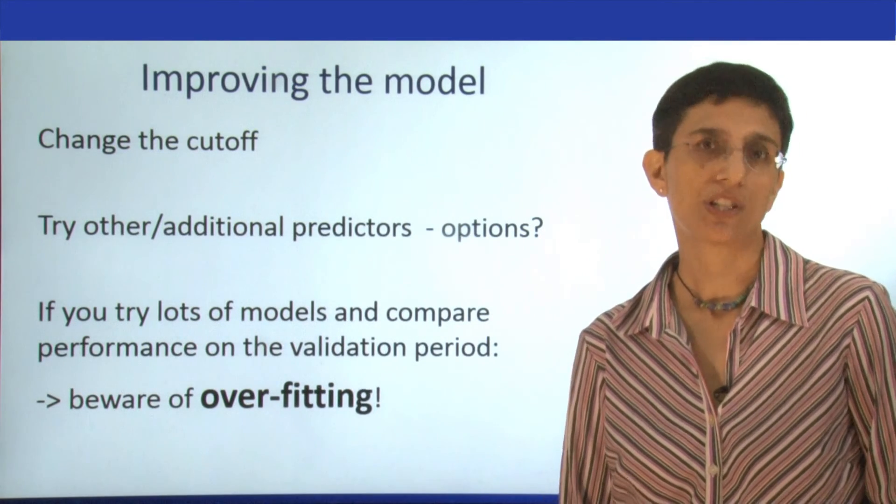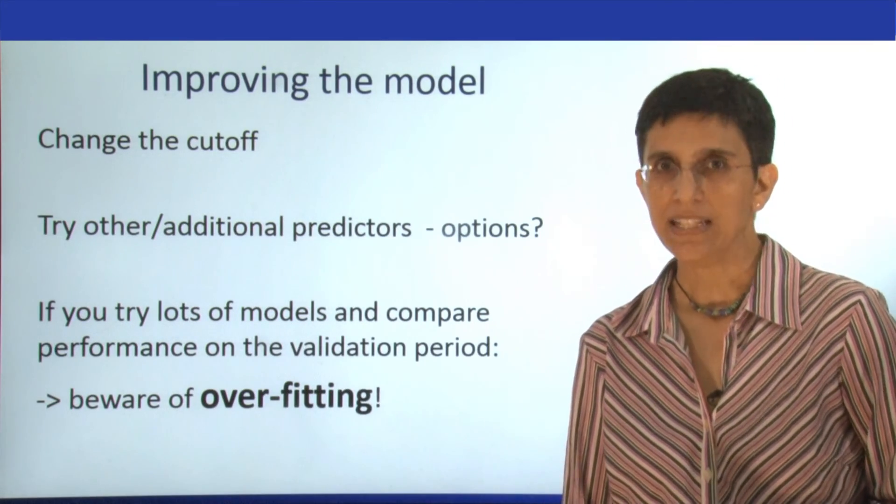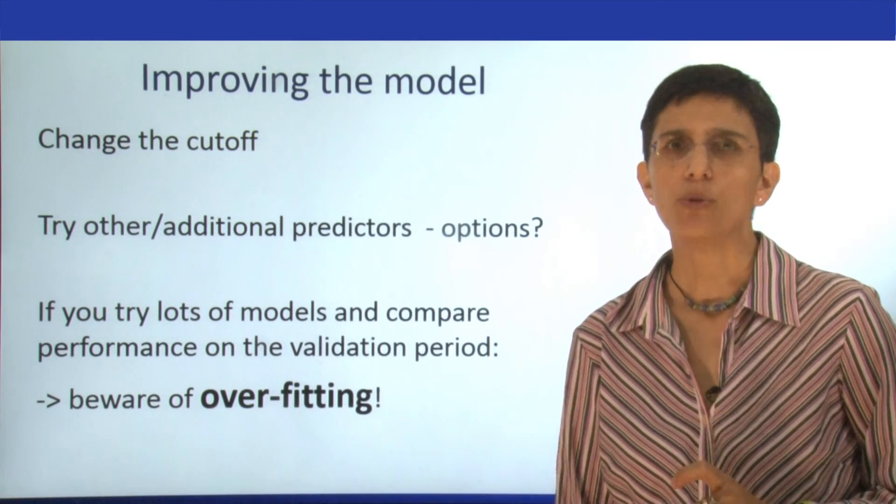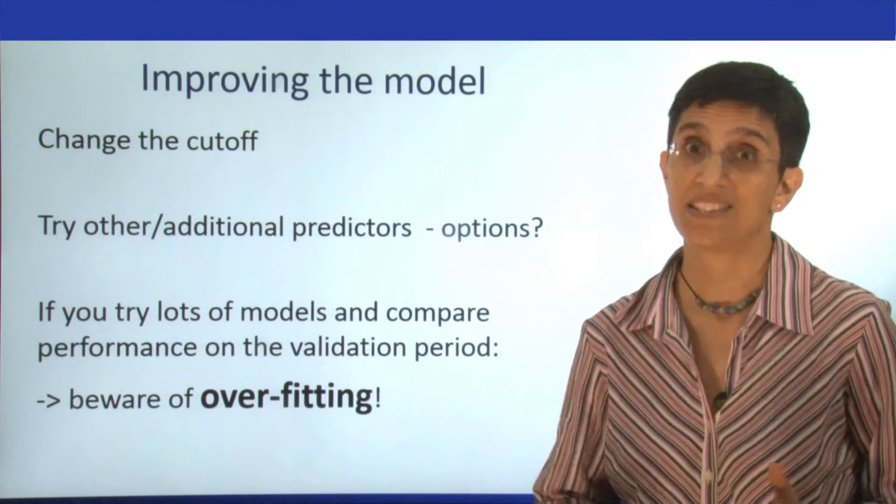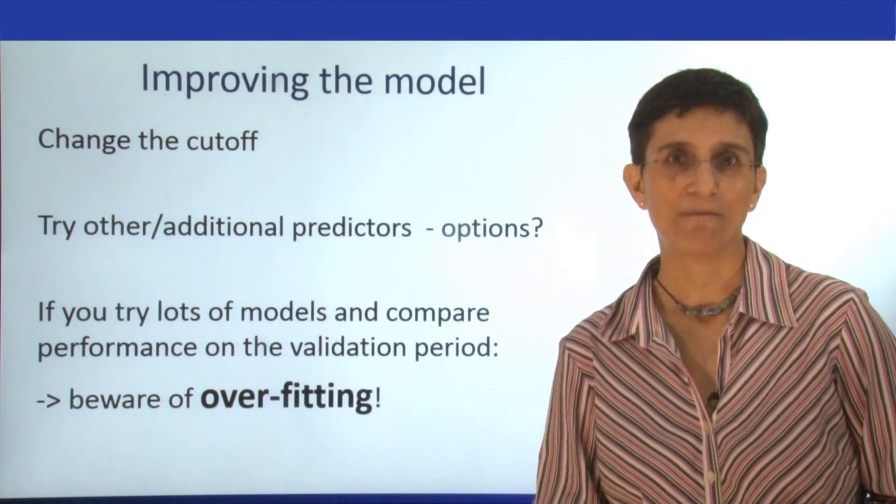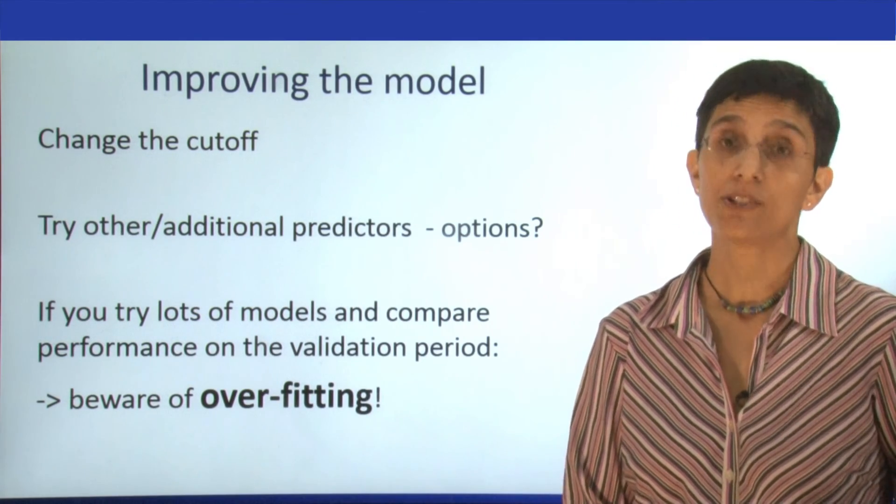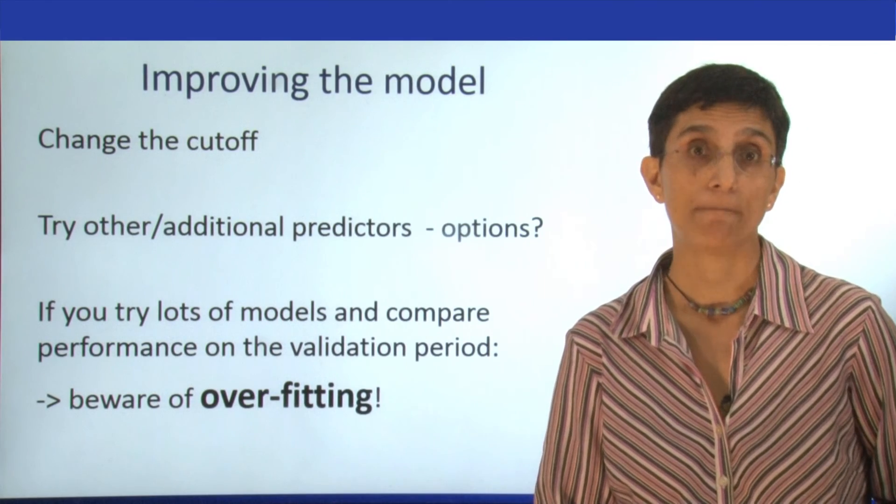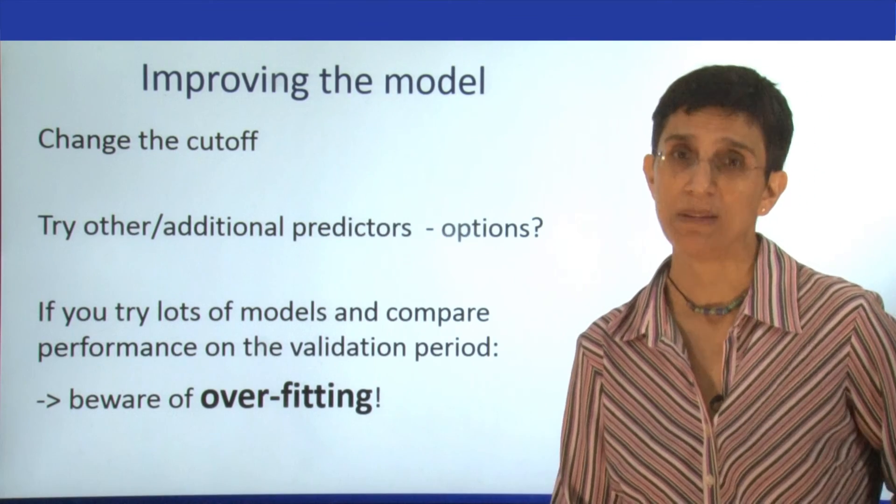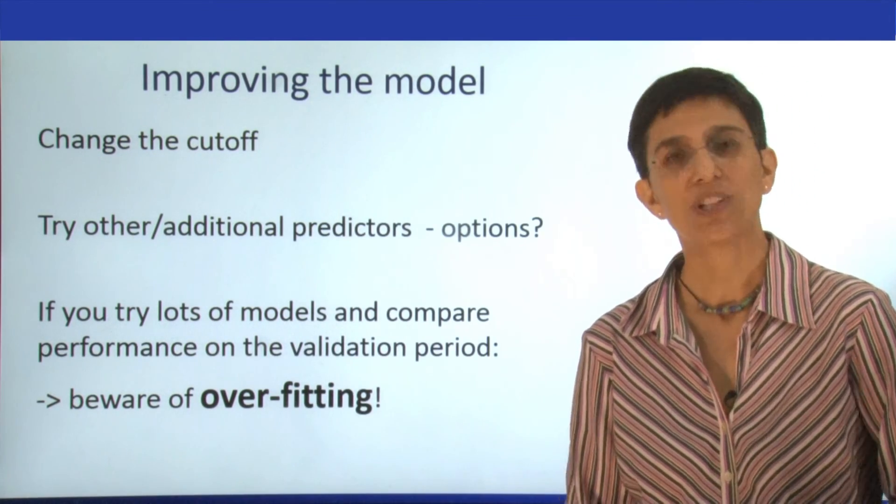When we're using logistic regression, there are a few ways that we can try to improve our model. One is to try and play with the cutoff value that we're choosing. We can try a few, but be careful because if we try to optimize the cutoff or try too many values, we'll end up overfitting our data. Another approach is like in linear regression. We can try using other predictors, maybe capturing seasonality in a different way. Just remember that once you start tweaking and trying too many models, then you might be overfitting your validation period, which is equally bad.